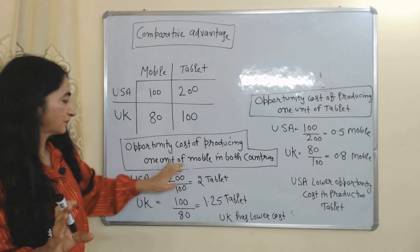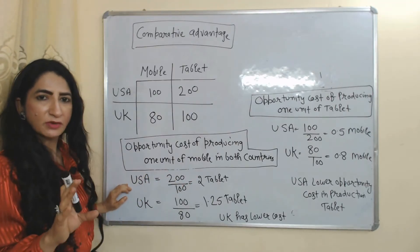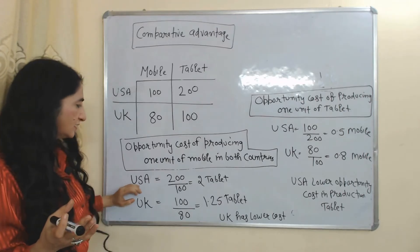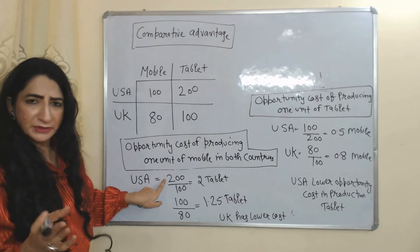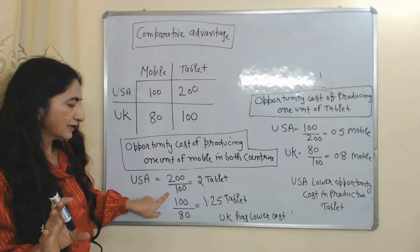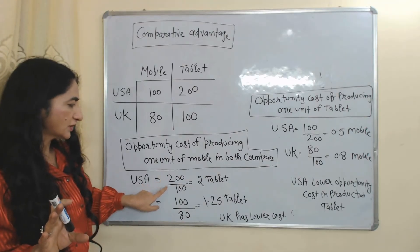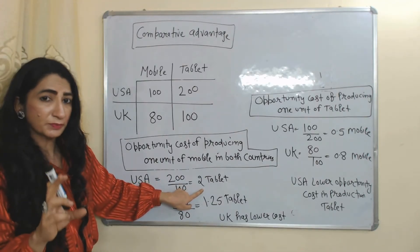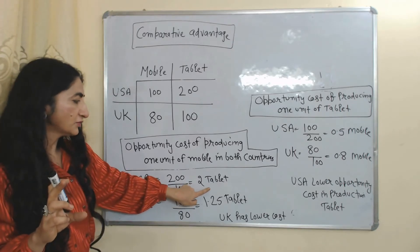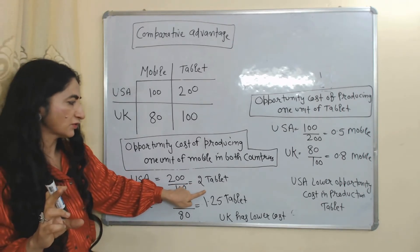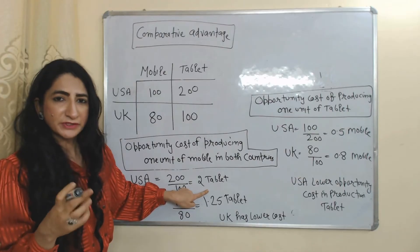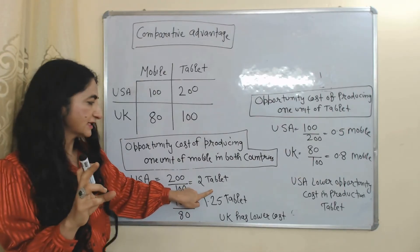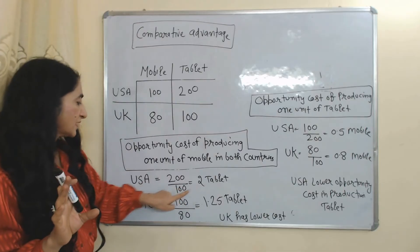Firstly, we will see the opportunity cost of producing one unit of mobile in USA. USA can produce 200 units of tablet and 100 units of mobile. 200 over 100 equals 2, meaning in order to produce one mobile, USA has to sacrifice 2 tablets. So the opportunity cost of producing one mobile in USA is the sacrifice of 2 tablets.